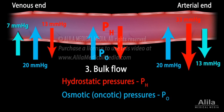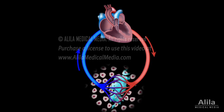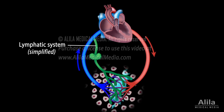Note that the net outward filtration pressure is greater than the net inward reabsorption pressure. This means more fluid is filtered out than reabsorbed back in — in fact, about 15% of the fluid is left in the tissues after capillary exchange. This fluid is picked up by the lymphatic system and returned to the circulation at a later point.